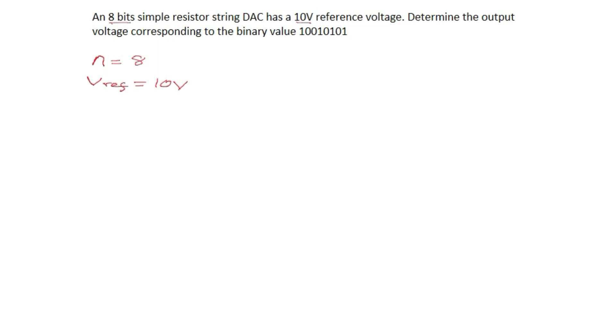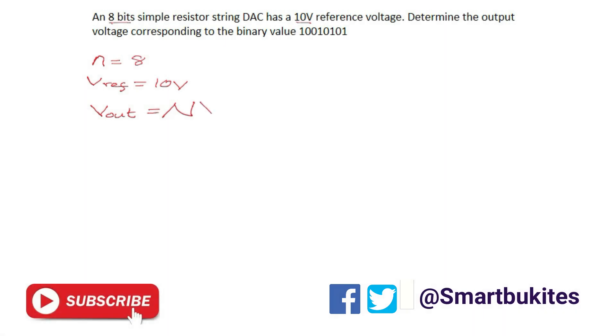So the output voltage for a simple resistor string DAC is given as Vout equals N multiply by Vref all over 2 raised power of n minus 1.